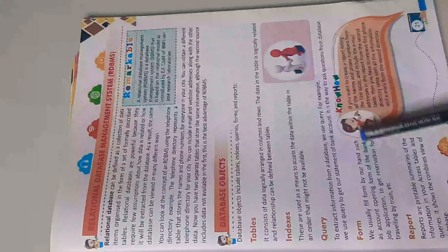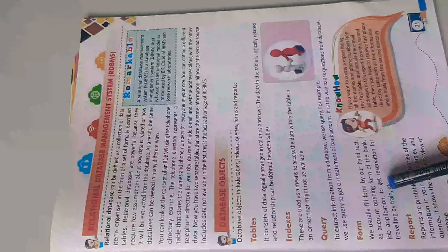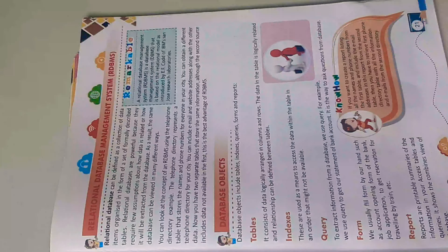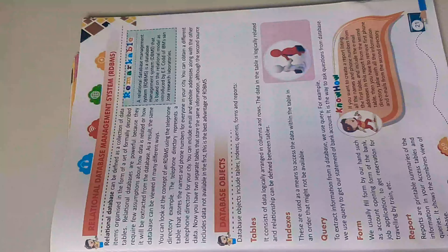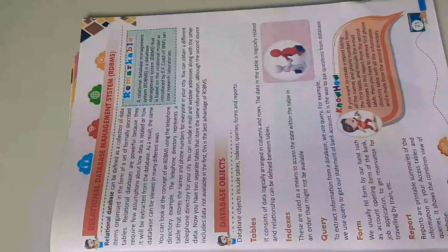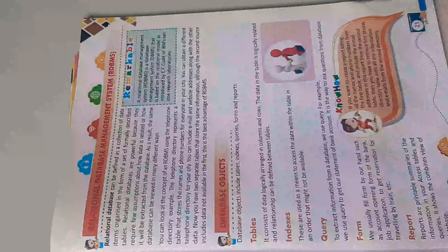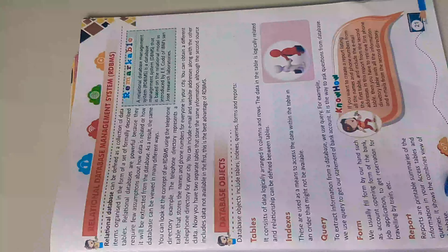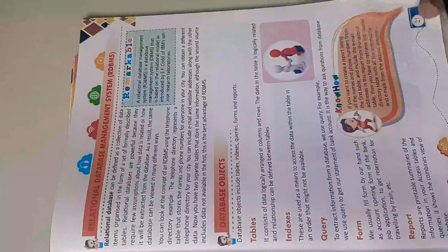We usually fill forms by hand, such as an account opening form at a bank, a job application, or a reservation form for train travel. In databases, forms are used to create input interfaces. Reports are printable summaries of the information in your Access tables and queries. They show a combination view of the database — for example, a school result can be prepared using a report.